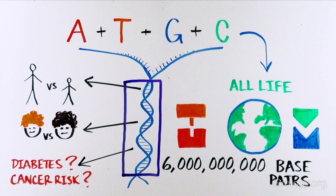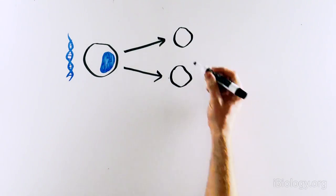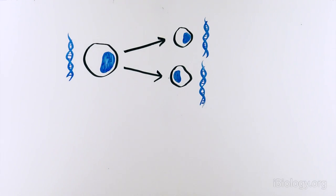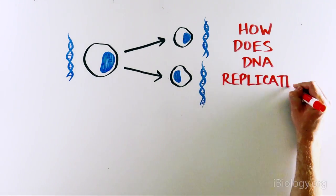However, one important question lingered. When a cell divides, the daughter cell will have the same DNA sequence as the parental cell. So how does this happen? How does one cell produce a second cell with the same exact DNA sequence? In other words, how does DNA replicate?